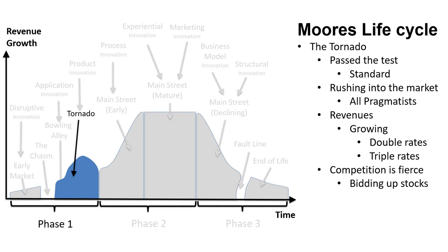Stage 4: The Tornado. The technology has passed the test of usefulness and is now perceived as necessary and standard for many applications. All pragmatists hanging back from committing are rushing into the market to ensure they don't get left behind. Customers of many types from many fields are making their first purchases and revenues are growing at double or even triple digit rates. Competition is fierce, with investors bidding up the stock of every company that participates in the category.